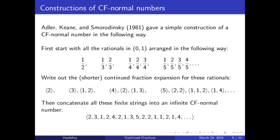Note that non-reduced fractions such as 2/4 are included. Then, for each of these rational numbers, we write out the shorter of the two finite continued fraction expansions for these rationals. So we start with 2, then 3, then 1, 2, and so on. Then, if we concatenate all of these finite strings into one infinite string, the result is a CF normal number.